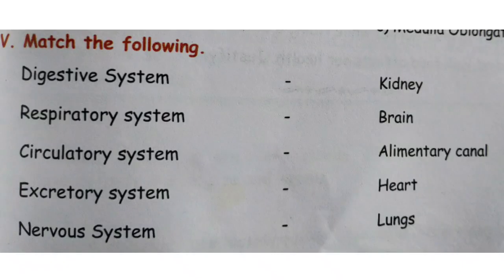Next, Section 5: Match the following. Left side: digestive system, respiratory system, circulatory system, excretory system, nervous system. Right side: kidney, brain, alimentary canal, heart, lungs. Digestive system matches with alimentary canal. Respiratory system — very good — matches with lungs.